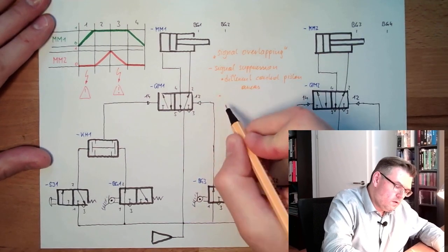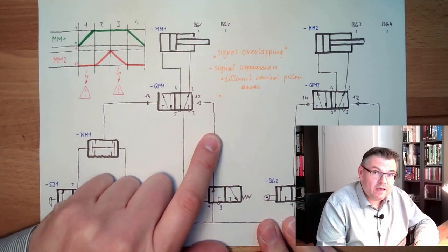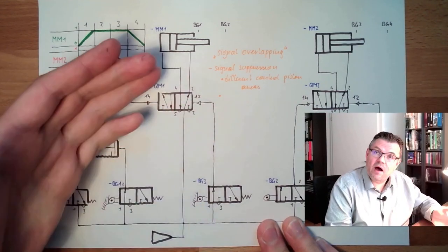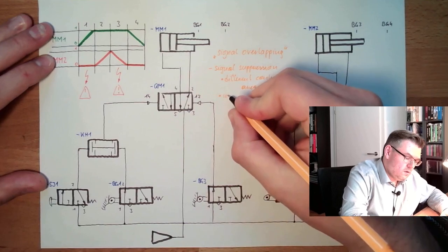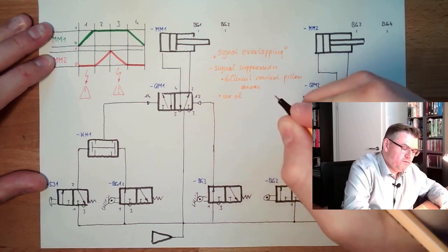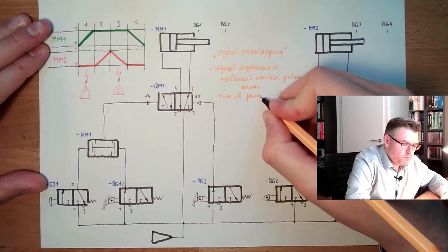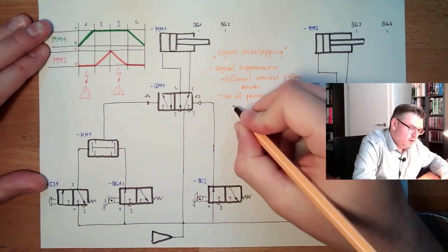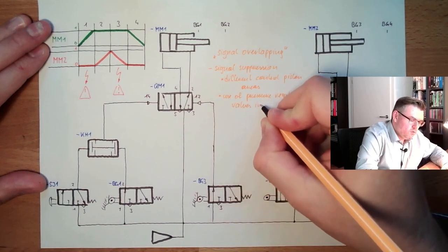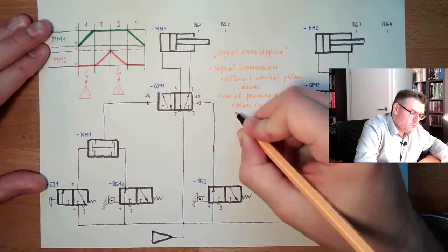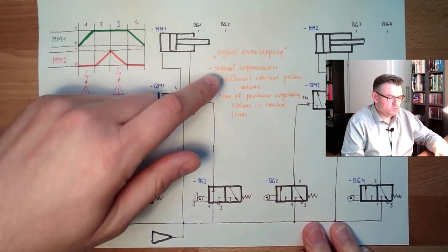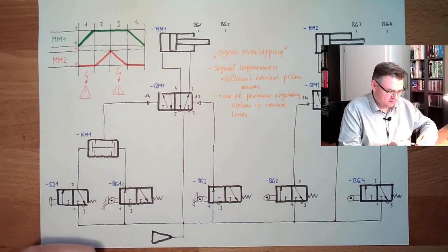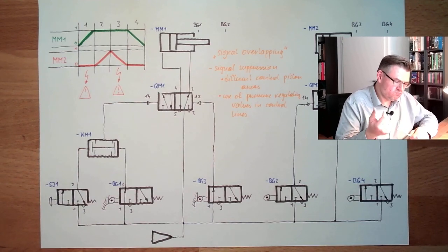Or, here in the control lines, I can use a pressure regulating valve. I simply reduce one of the pressures in the control lines, then the higher pressure is winning. Use of pressure regulating valves in control lines. This is one possibility. Signal suppression. So, to weaken one signal.